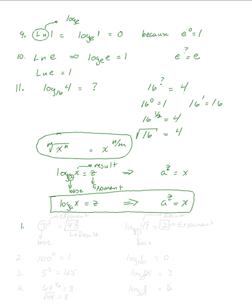Now let's go in the other direction — exponents to logs. Take 7 squared equals 49. I write down log; the 7 is the base, which goes as a subscript; the result 49 goes inside the log; and the exponent 2 goes on the other side of the equals sign. So: log base 7 of 49 equals 2.